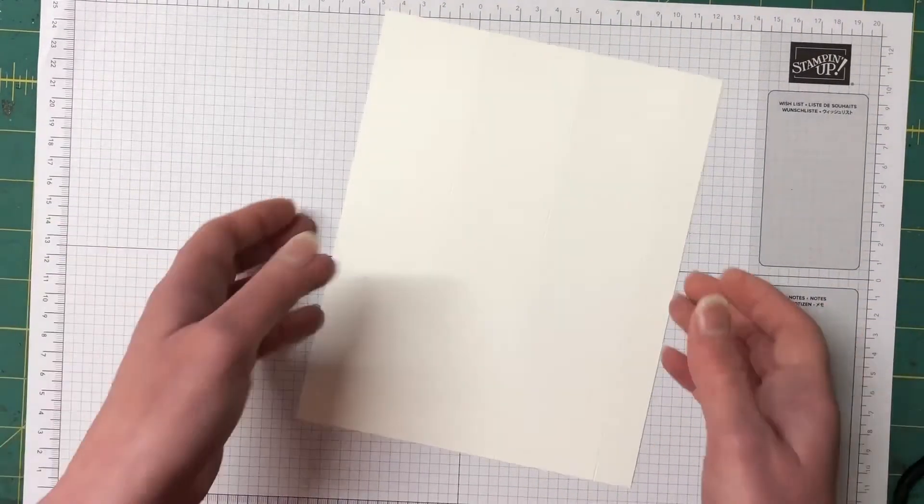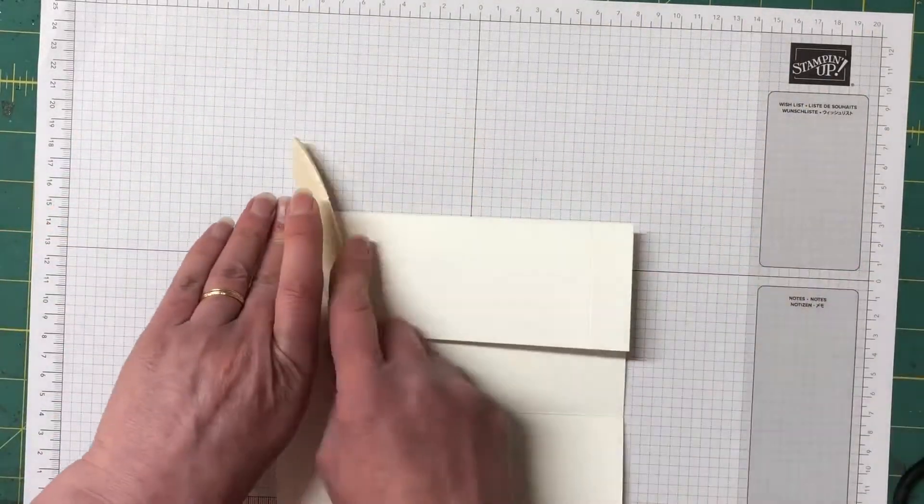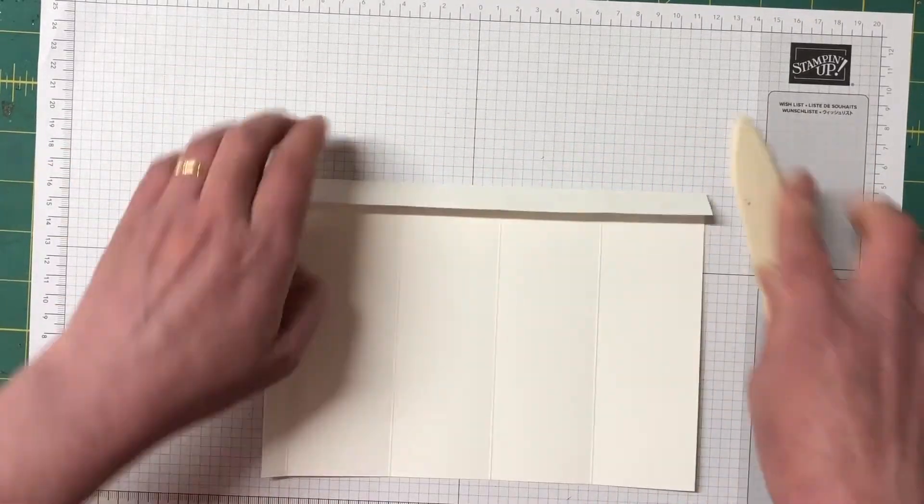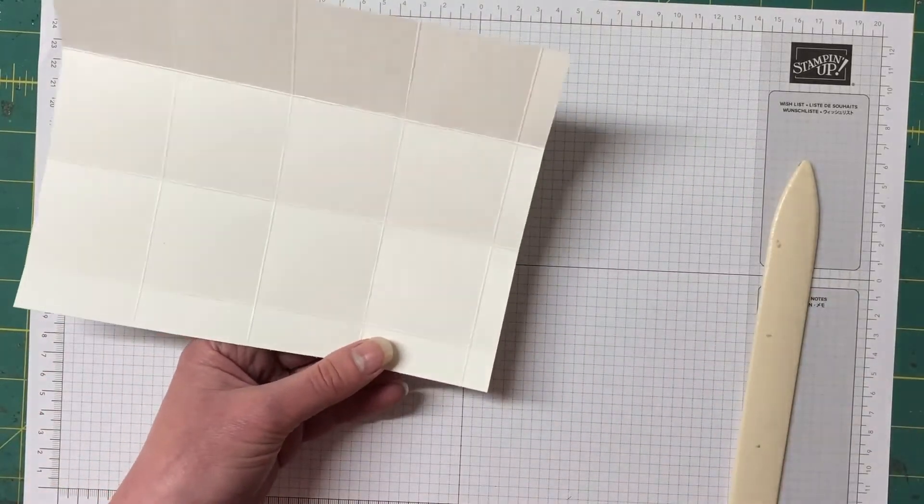Now this is a fairly basic box so as we fold and burnish on all the edges with the bone folder we're then going to go through and make the box. If you make a lot of boxes this will come to you pretty easily and if you're not making boxes very often this is a really great one.